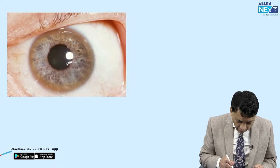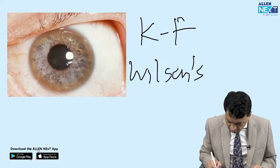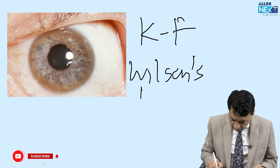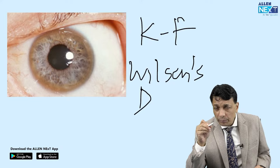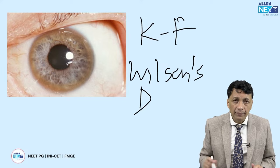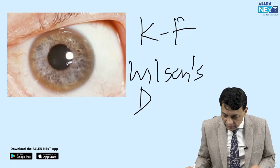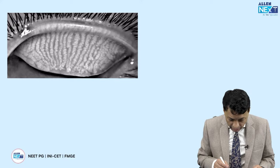Look at this brownish ring on the corneal periphery — this is the famous Kayser-Fleischer ring of Wilson's disease, where you see deposition of copper on Descemet's membrane. Neurologists often ask us to confirm Wilson's disease by looking on the slit lamp. It could be greenish or brownish — copper deposition called the KF ring of Wilson's disease. The other famous ocular finding of Wilson's disease is the sunflower cataract. Sunflower cataract and KF rings are the two important ocular findings of Wilson's disease.